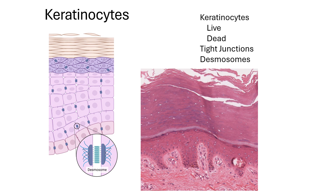One thing that students often get confused about is the borderline between the alive and dead cells in skin. As you can see from this picture, all of the cells up here are dead, and all of the cells down here are plump and alive with a readily discernible nucleus. The borderline of alive and dead cells occurs about one-third of the thickness away from the dermis — about the distance where keratinocytes get cut off from the blood vessels in the sub-papillary plexus that loop up into the dermal papillae.